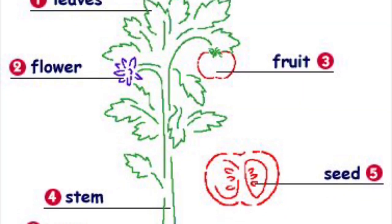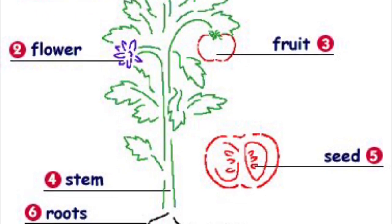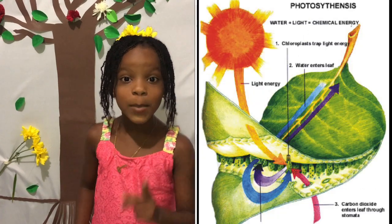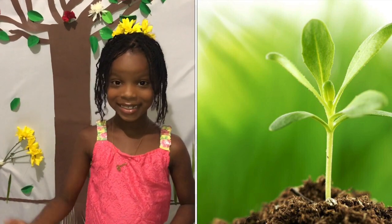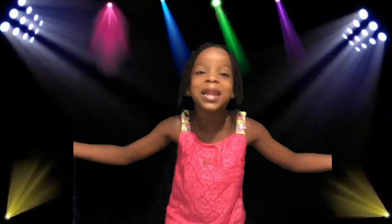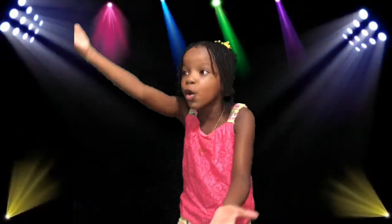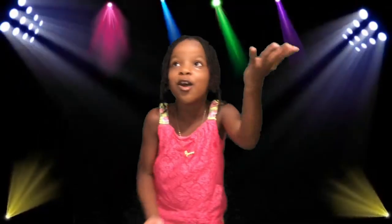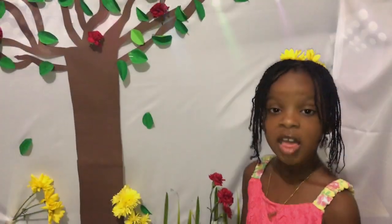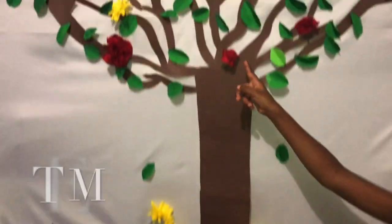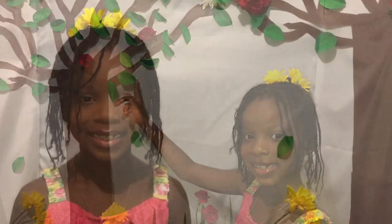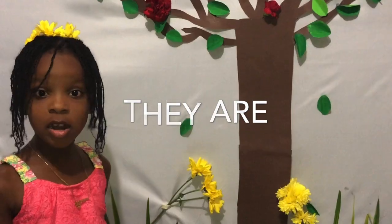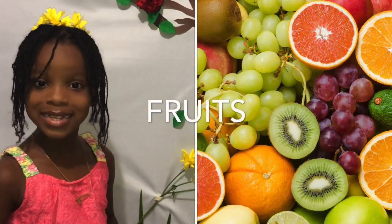Plants have six parts. The first three help plants get water, make food, and grow. There are roots, stem, and leaves. The second three help plants grow new plants. There are flowers, fruits, and seeds.